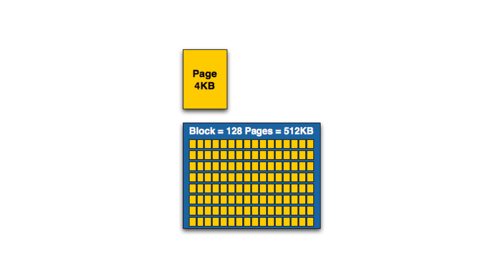Before we talk about SSD trimming we need to lay a little bit of groundwork and talk more about how SSDs store, modify, and delete data. With SSDs, data remains in flash memory until the block containing the data is erased. A block is a data structure composed of units called pages. A page is the smallest unit of data storage on an SSD, composed of multiple memory cells. Write operations can only be performed on empty pages, and erase operations can only be performed at the block level, not the page level.